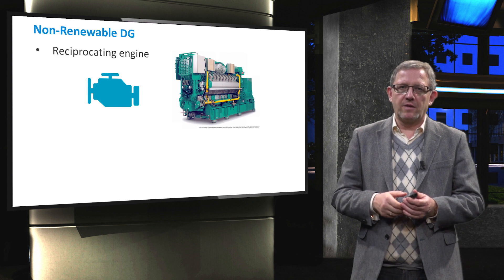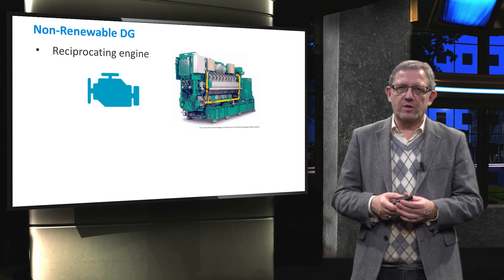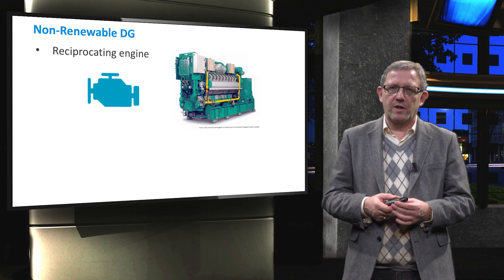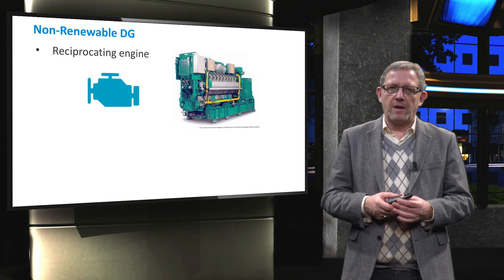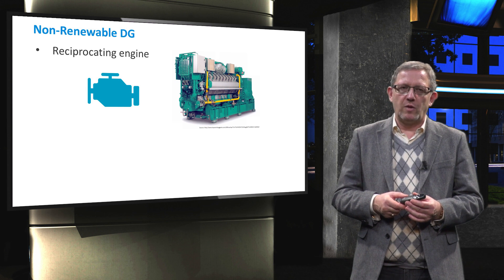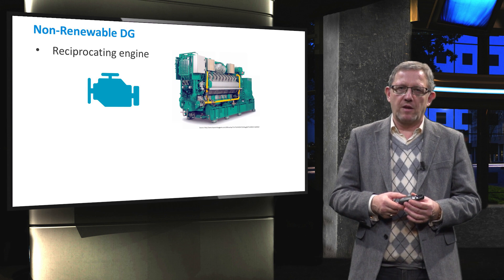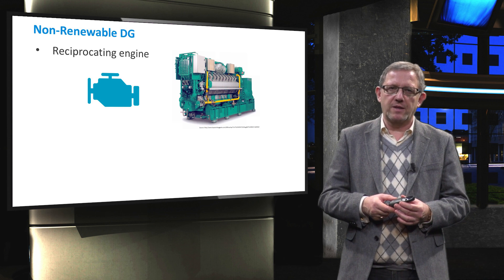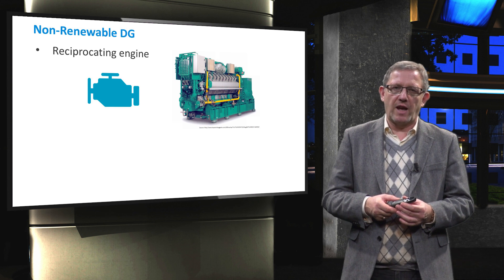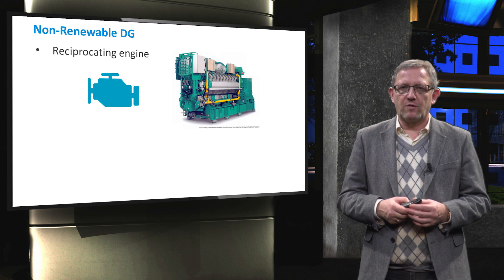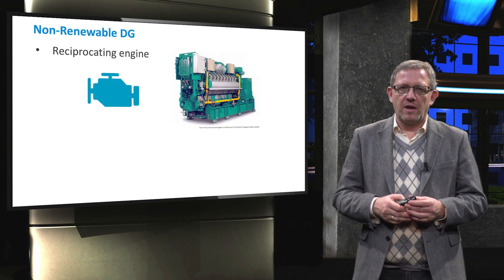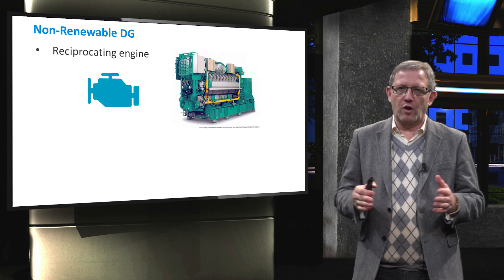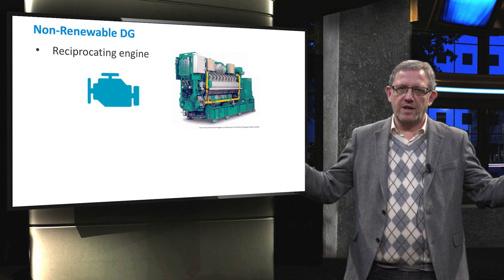We now start by introducing three widely used generators based on non-renewable resources. The reciprocating engine, which utilizes resources like diesel and gas, is one of the most important developments and inventions of the 19th century. The size of this engine could vary from very low to high values, for instance from 3 kilowatt to 6 megawatt.